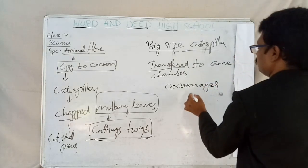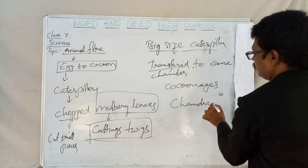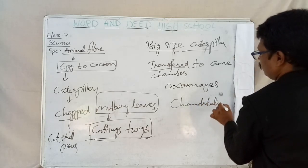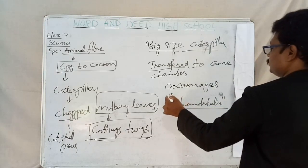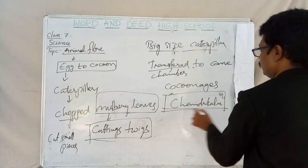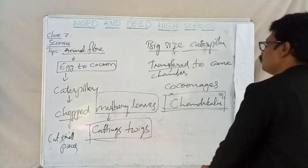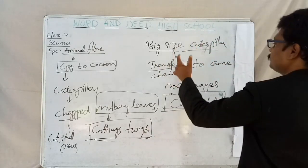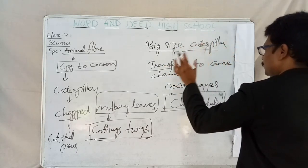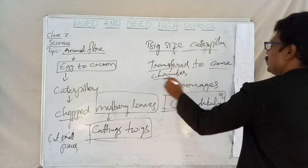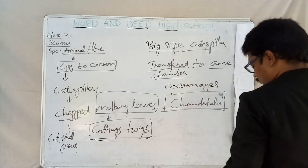These cane chambers are called kakunajas or chandrikalu in our local language. At this stage, the caterpillars cannot move and should be transferred from where they settled to the cane chambers. At this stage they are called kakunajas or chandrikalu.